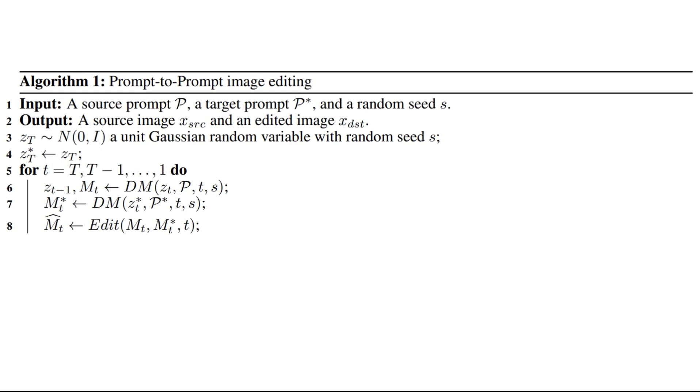All the thing that this paper proposes is an edit function unique per each editing task that receives both of the attention maps and updates new attention maps Mt hat. Finally, we use the same denoising that we use at step 7, but with the difference that now the attention maps for some tokens are replaced and we get the less noisy image zt minus 1 star that has the structure control we want.